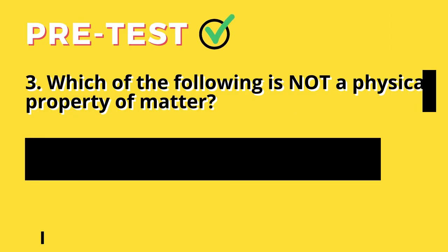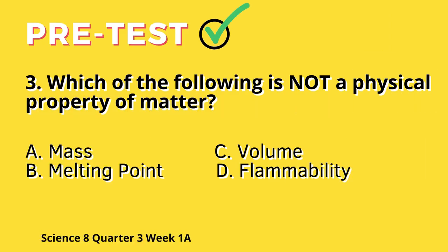Question 3: Which of the following is not a physical property of matter? A. Mass. B. Melting point. C. Volume. D. Flammability.